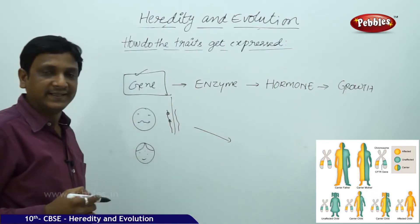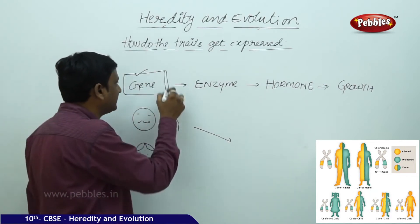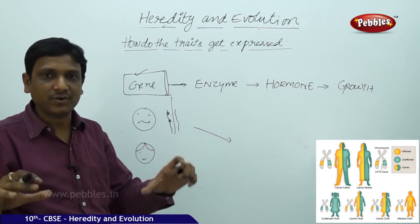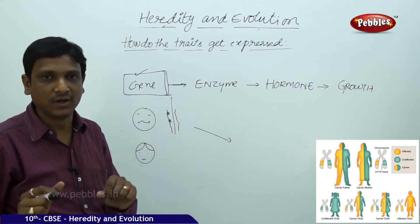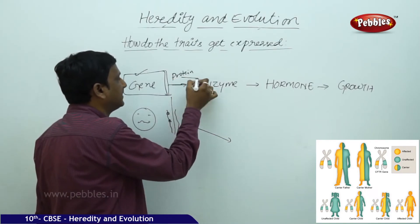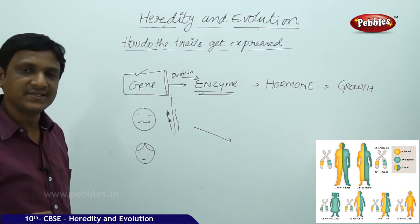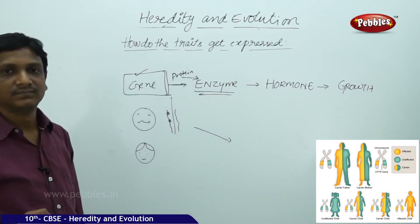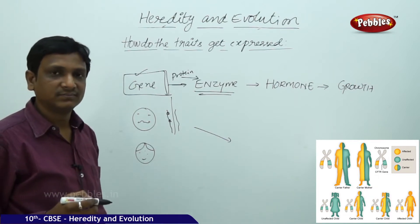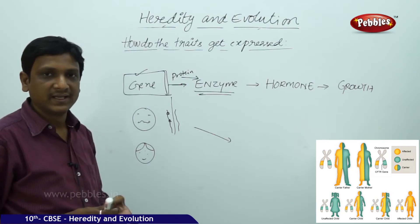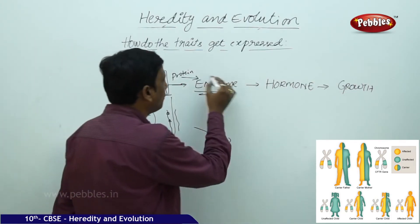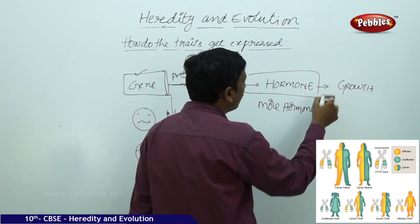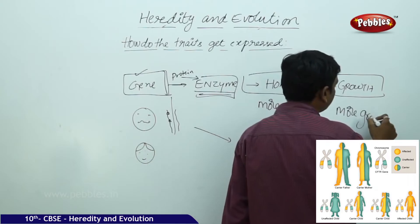The instruction is there in the gene of the boy that he should grow tall. The gene, by using the cellular apparatus — mitochondria, cytoplasm, especially the Golgi complex — prepares a protein, which is nothing but an enzyme. When the gene carries the instruction for tallness, it prepares more enzyme, which produces more hormone, and more hormone is responsible for more growth. The boy grows tall.